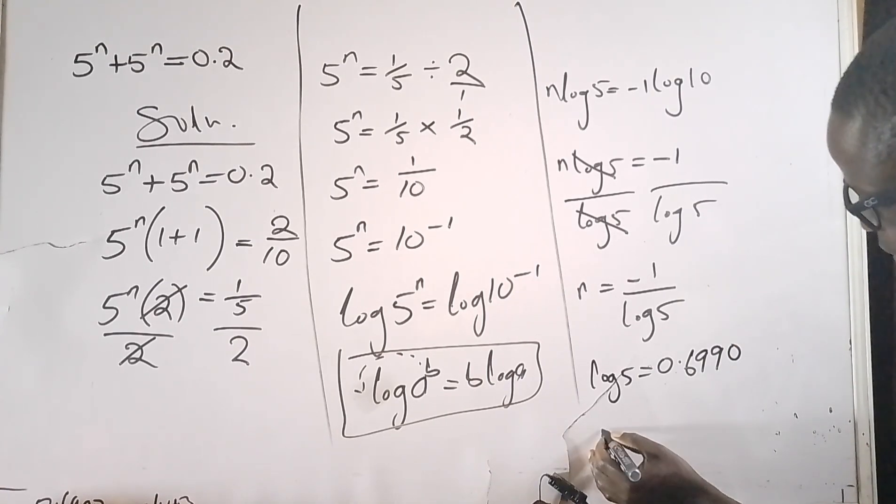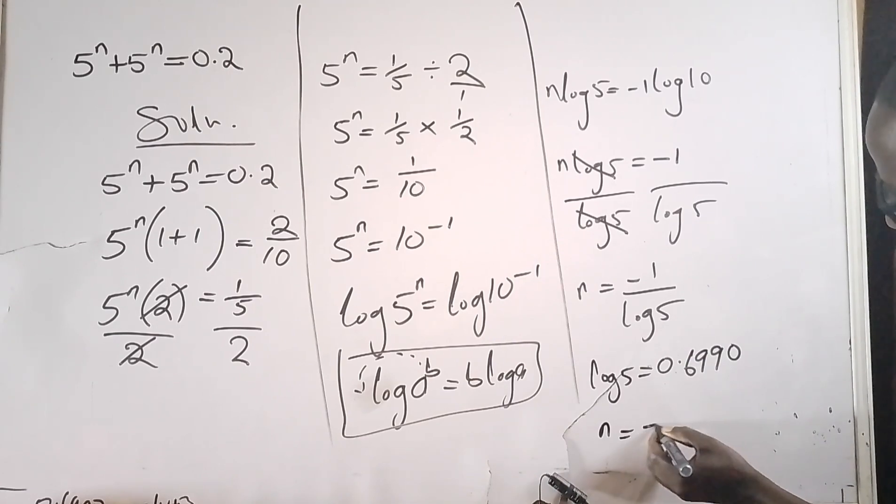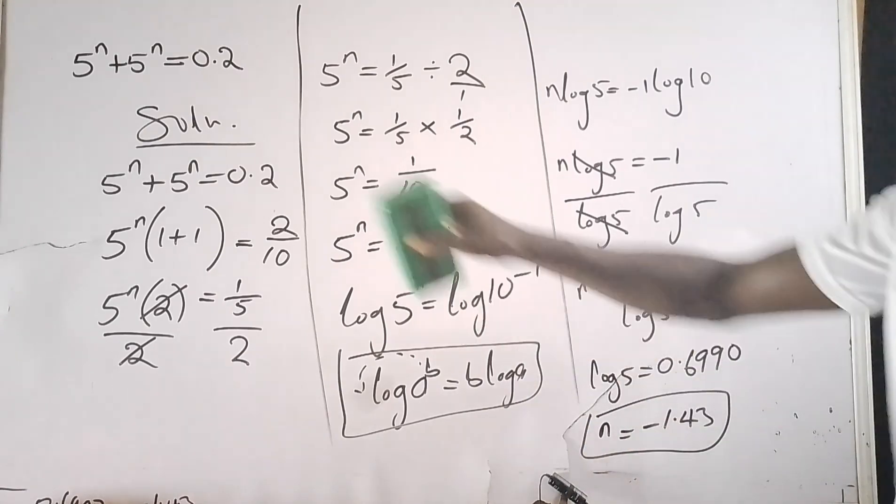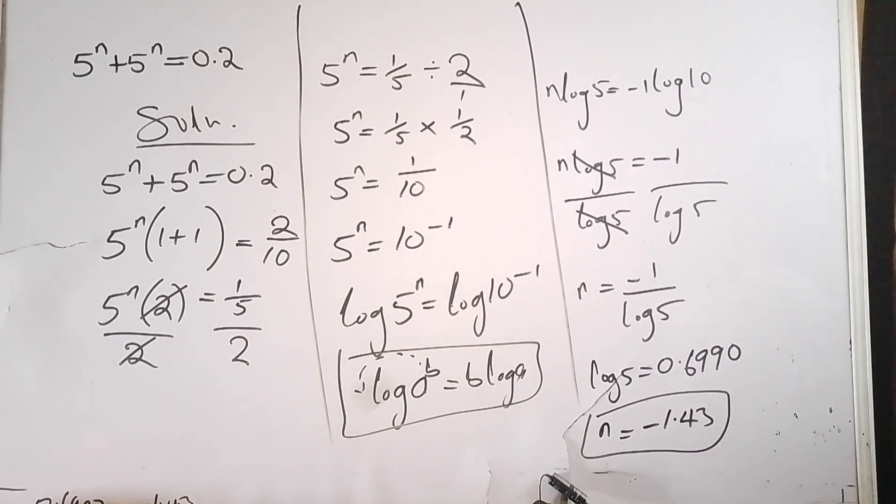So n equals -1 divided by this number, which will give you -1.43. This is the value of n as far as this particular equation is given. Thank you so much for watching.